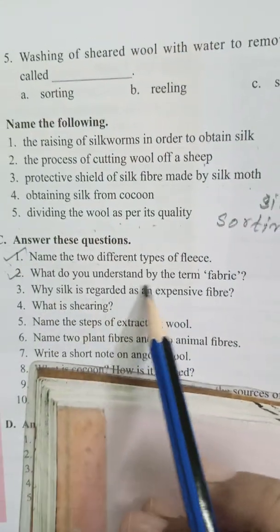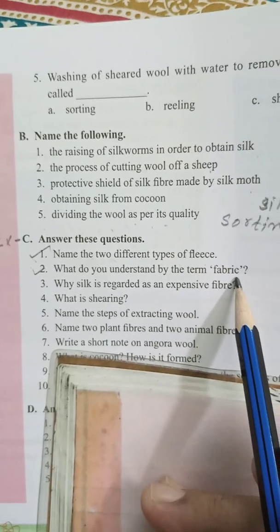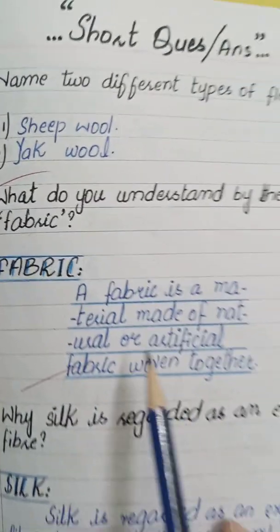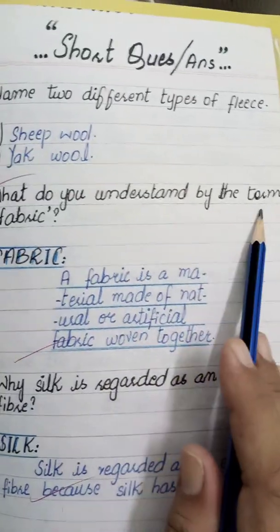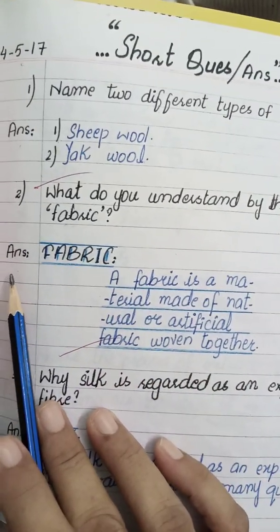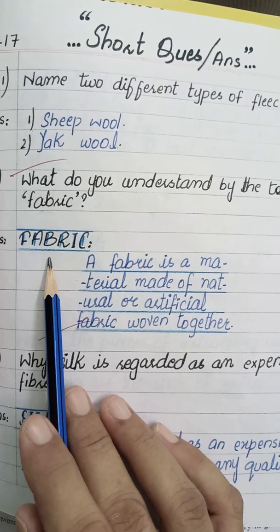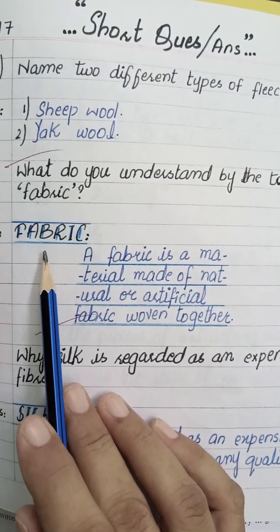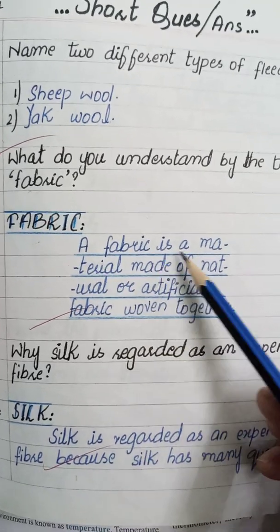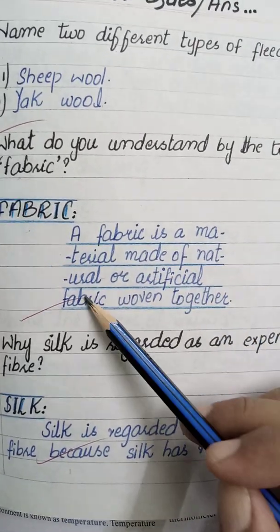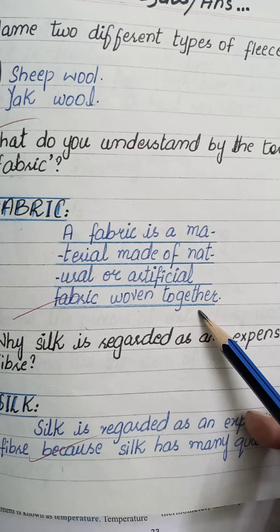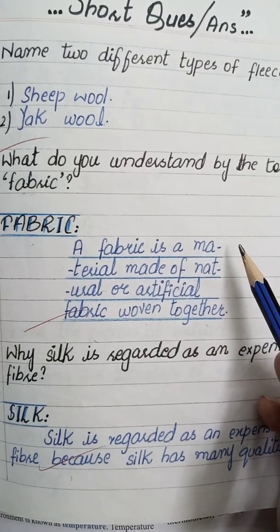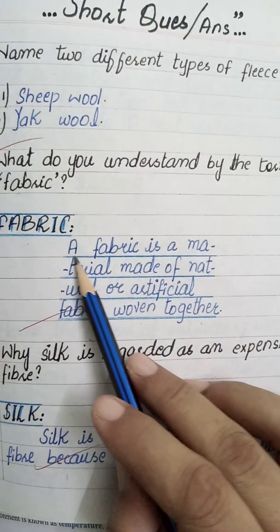Question number 2: What do you understand by the term fabric? Write the question in your copy with a black pointer. Give the heading of fabric and write the answer: A fabric is a material made of natural or artificial fibers woven together. The answer should be centralized and underlined with blue pencil.